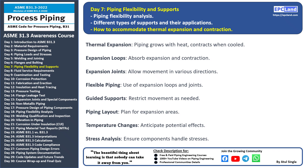Expansion loops: incorporating expansion loops in the piping layout allows for controlled expansion and contraction. These loops absorb the movement without transmitting stress to the system. Expansion joints provide flexibility and allow movement in various directions, ensuring that the system can expand and contract without damage. Using a combination of expansion loops, expansion joints, and guided supports creates a flexible system that can handle thermal movement.